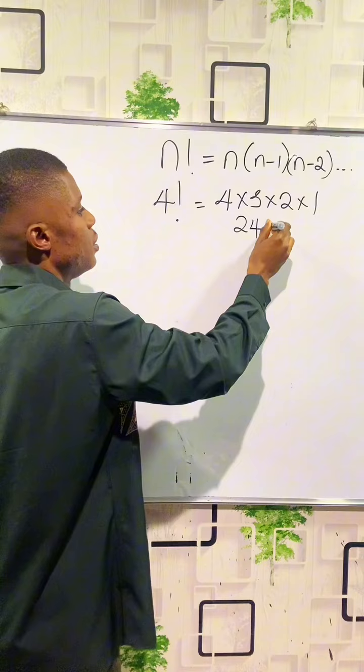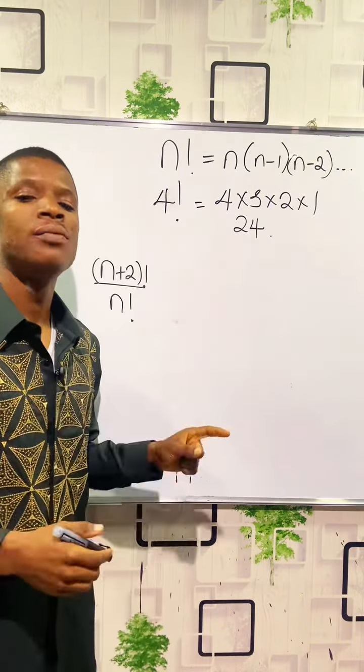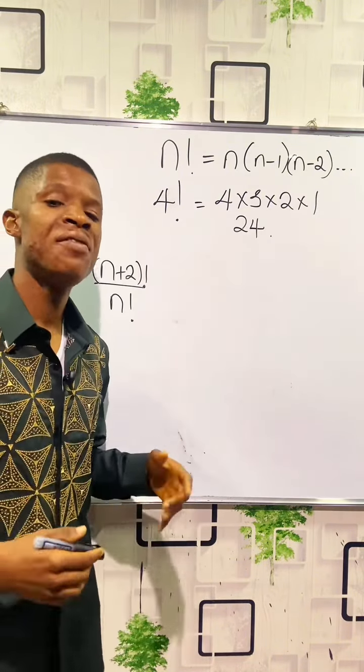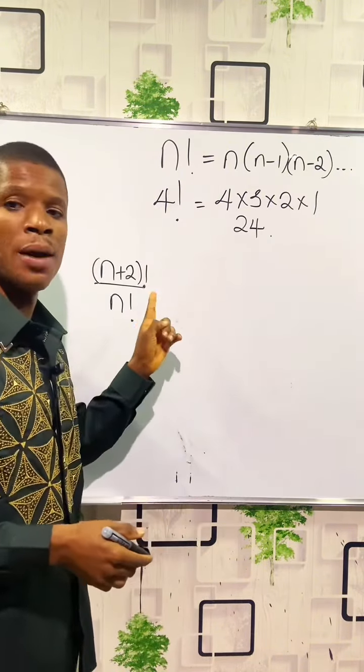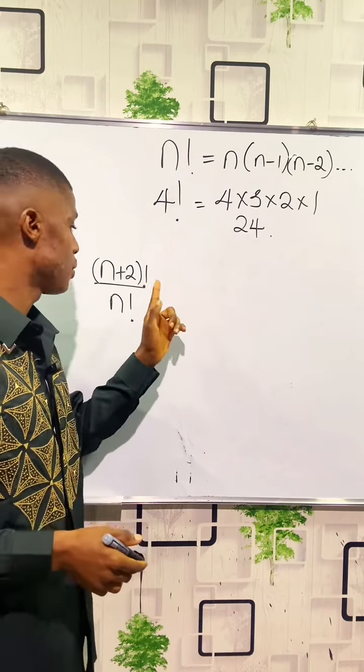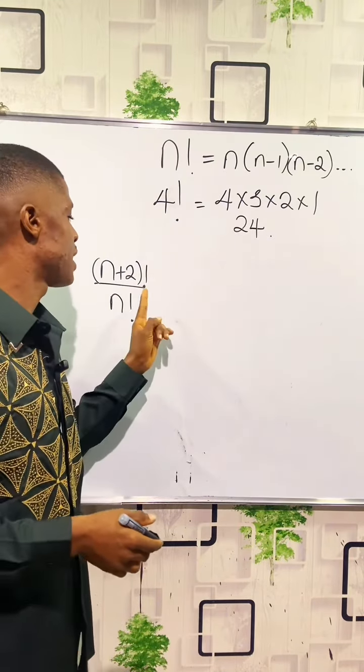So 4 factorial is 24. When you have a division in factorials — for example, (n+2)! divided by n! — you have to expand the numerator so that what is left is what is not contained in the denominator.